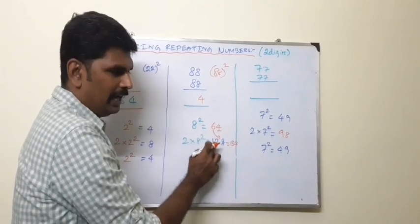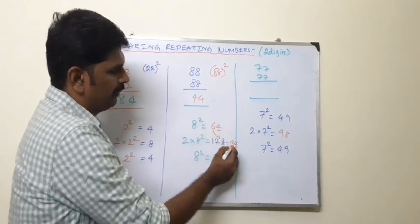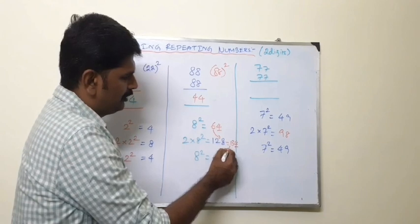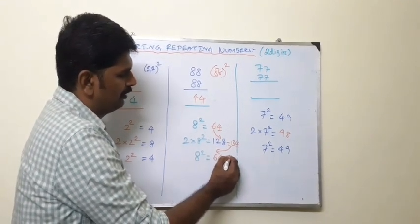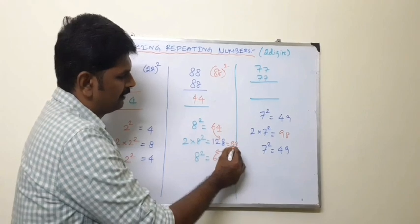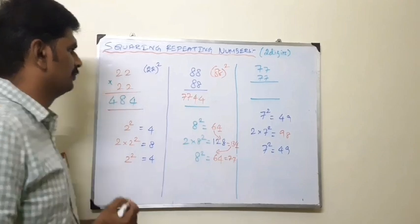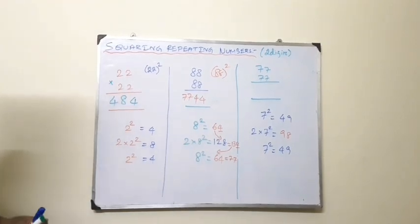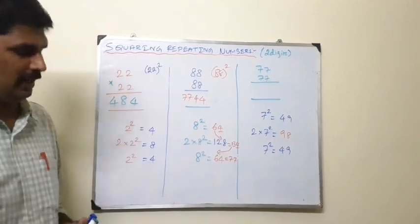Now we have unit digit is 4. Remaining is 13. In the final result, 13 plus 64 is 77. 3 plus 4 is 7, 1 plus 6 is 7. So 77 is the answer. So 88 into 88 is equal to 7744 is the final answer.